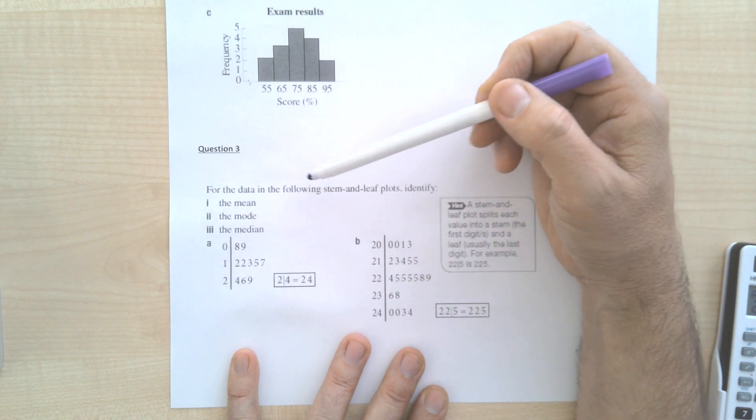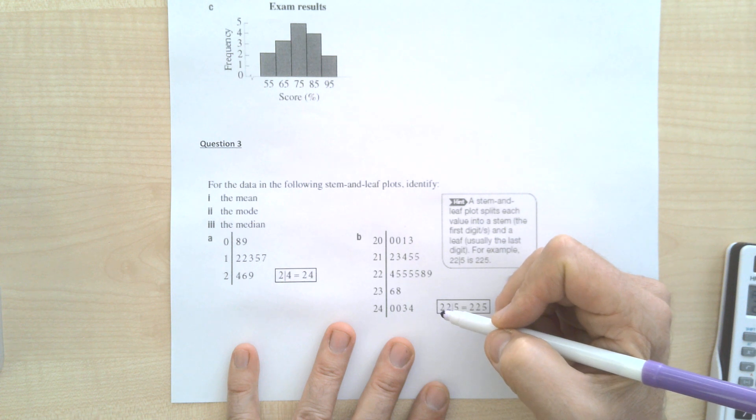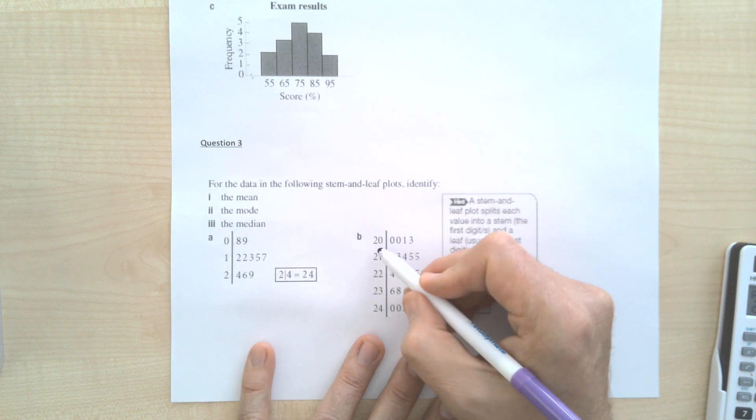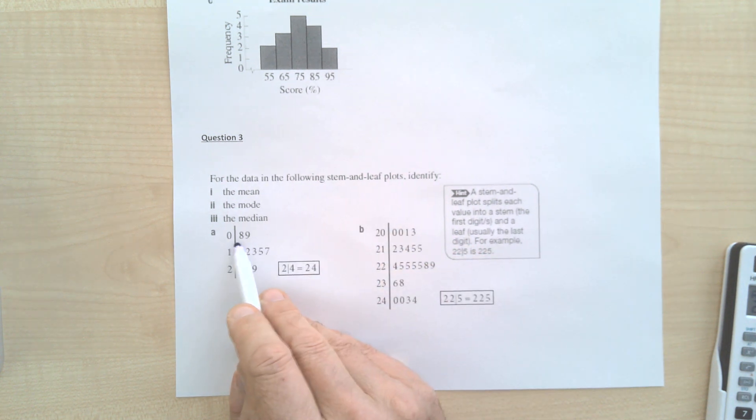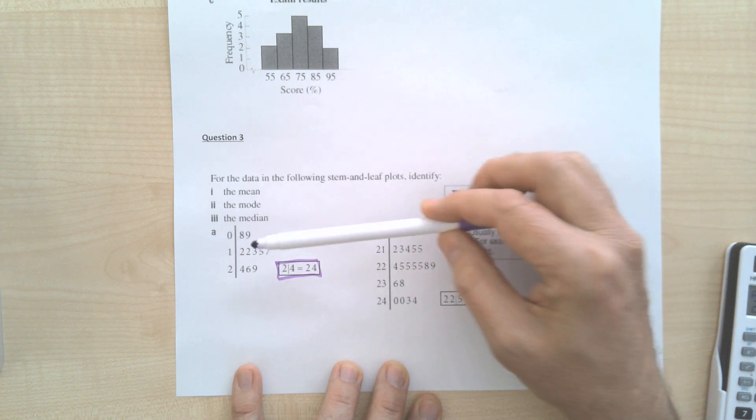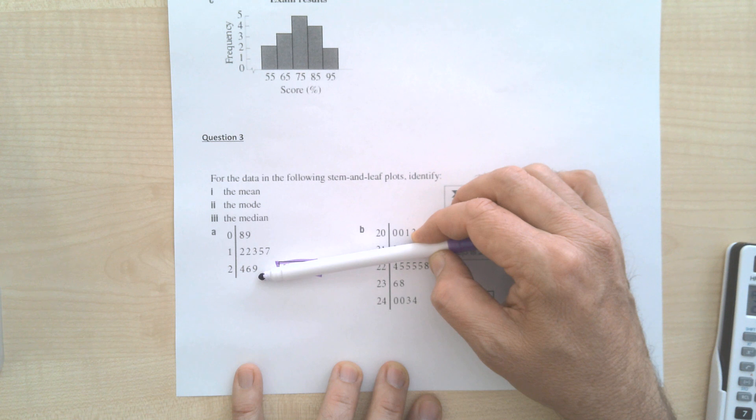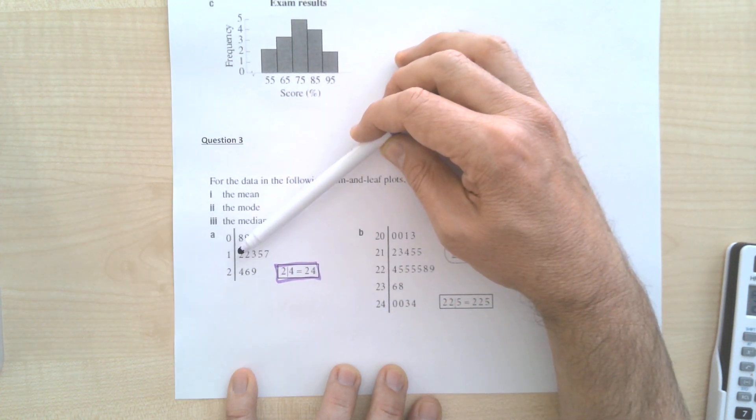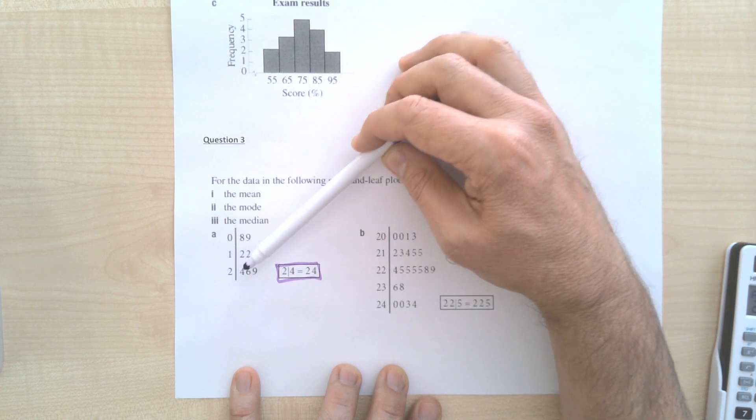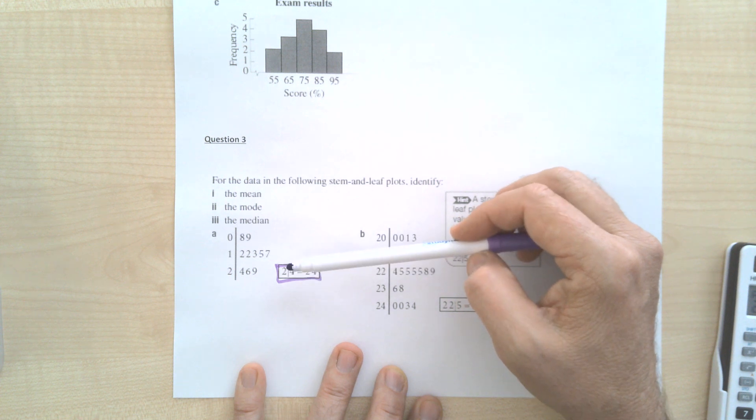Okay, but if you go down to here: for the data in the following stem and leaf plots. You've seen these things before, but let's unpack it. 0 8 means 8. 0 9 means 9. 1 and then 2 means 12. 1 and then 7 means 17. That's what that says. So what these things have done is they've actually put the data in order for you. So the data actually goes 8, 9, 12, 12, 13, 15, 17, 24, 26, 29. So it's just a nifty little way of putting the data in order.